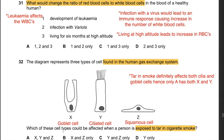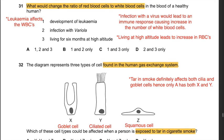Question 31: What would change the ratio of red blood cells to white blood cells in a healthy human? Living at high altitude leads to an increase in red blood cells, changing the ratio. Infection with variola - a virus - causes an immune response increasing the number of white blood cells, also changing the ratio. Development of leukemia affects the white blood cell count, again affecting the ratio. All three change the ratio. Therefore the answer is A: 1, 2, and 3.